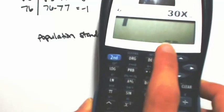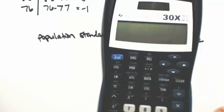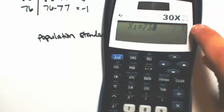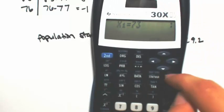So you're going to hit second data. And you're going to say one variable. So now at this point, it should say STAT on your calculator. So then you're going to hit data. Now you can put the data in. So X1 was 73.